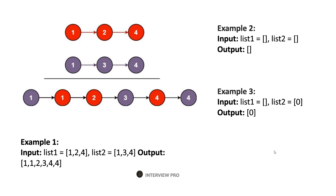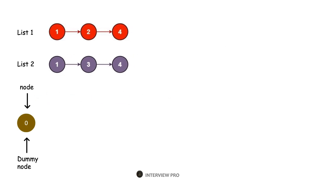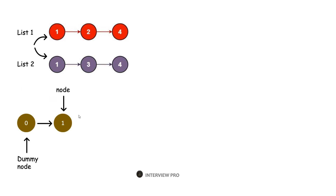Let's see how to solve this problem using the first example. We have list 1 and list 2. Let's take a dummy node with value 0 and have two pointers — one pointing to the dummy node and the other called node. Now let's compare the first two values in list 1 and list 2. The first value is 1 and the second is also 1. Since both nodes have the same value, we'll add the node from list 1 to our dummy list and update the node pointer to point to the latest node.